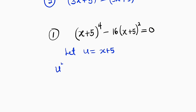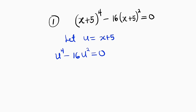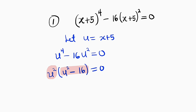This becomes u to the power of 4 minus 16 multiplied by u to the power of 2, and the whole of this equals 0. Now we have a simple equation. We can factorize the left-hand side — the highest common factor here is u squared. So we have u squared outside, and inside we have u to the power of 4 divided by u squared, which is u squared, minus 16u squared divided by u squared, which is 16.